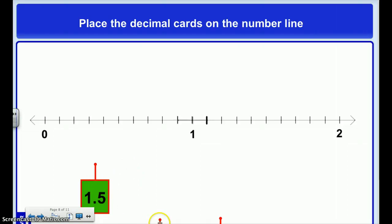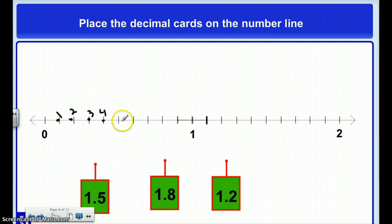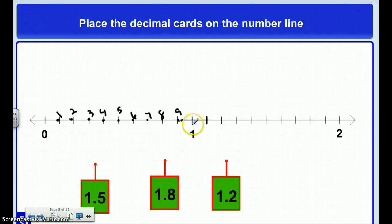So now I've got some whole numbers here. I have to represent this number line using parts of a whole and whole numbers. Let's see if this works: 1 tenth, 2 tenths, 3 tenths, 4, 5 tenths, 6 tenths, 7 tenths, 8 tenths, 9 tenths, and then this is going to be 10 tenths, or one whole.